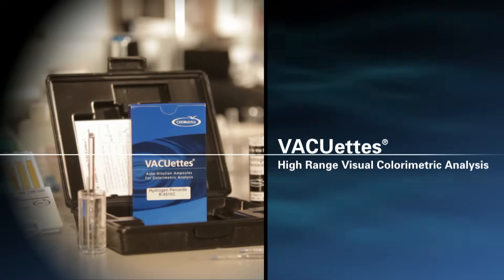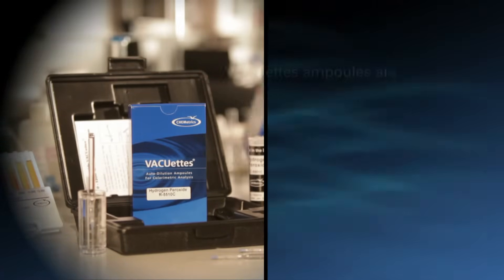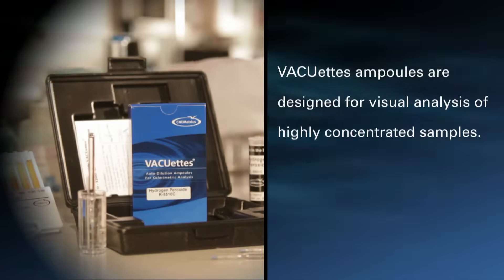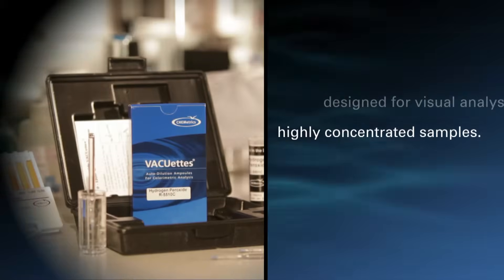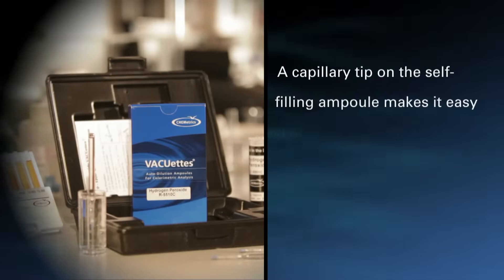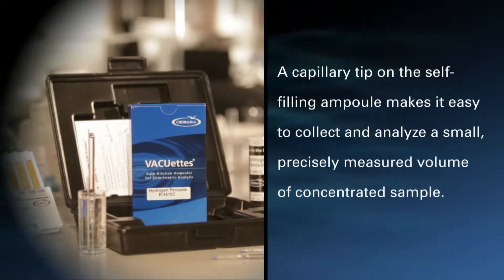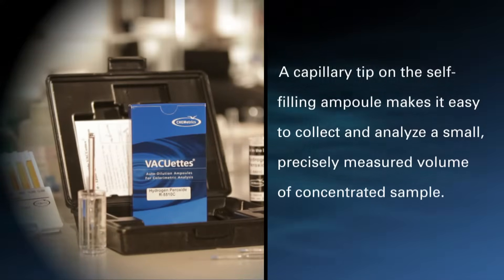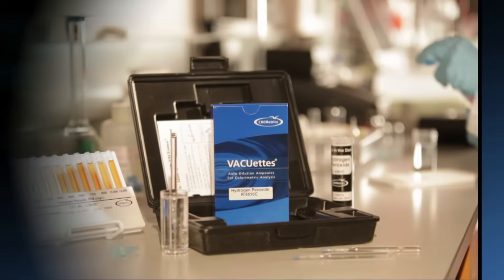VACUETS Autodilution Method for Visual Colorimetric Analysis. VACUETS Ampules are designed for visual analysis of highly concentrated samples. A capillary tip on the self-filling ampule makes it easy to collect and analyze a small, precisely measured volume of concentrated sample.